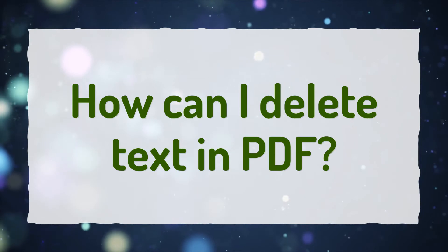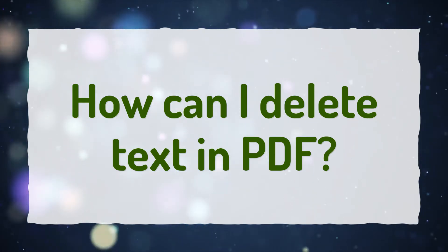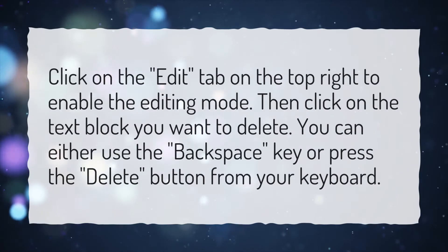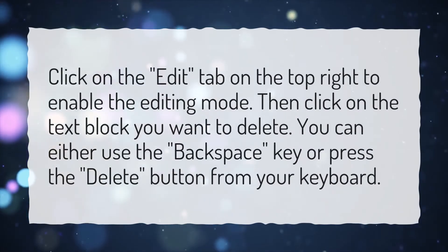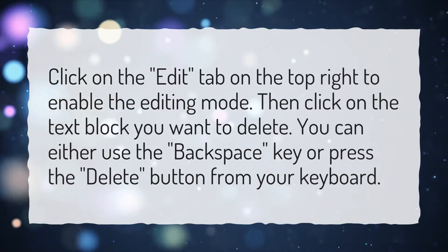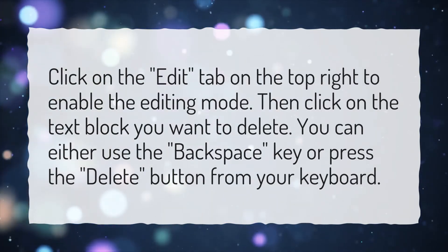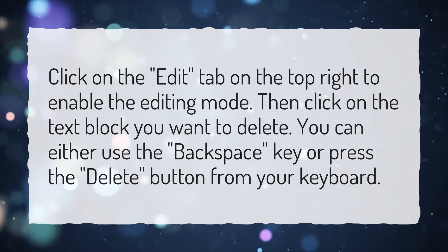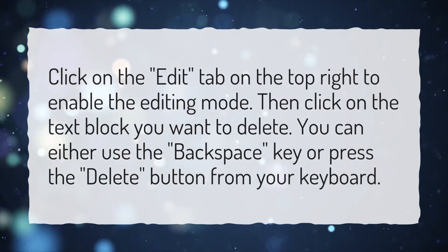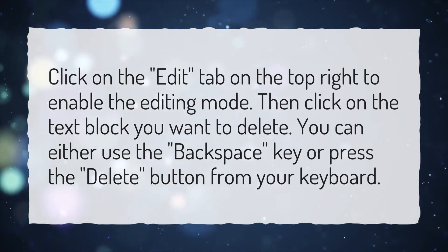How can I delete text in PDF? Click on the edit tab on the top right to enable the editing mode. Then click on the text block you want to delete. You can either use the backspace key or press the delete button from your keyboard.